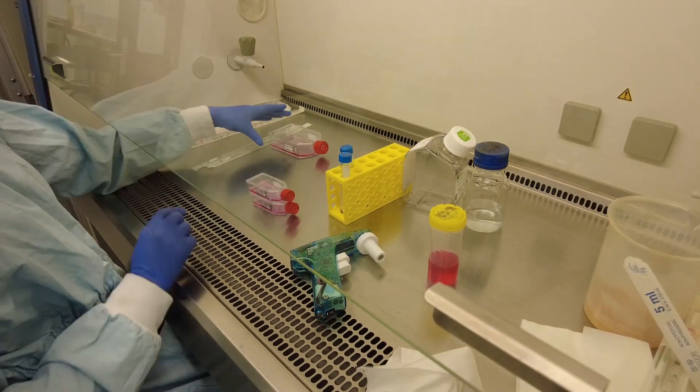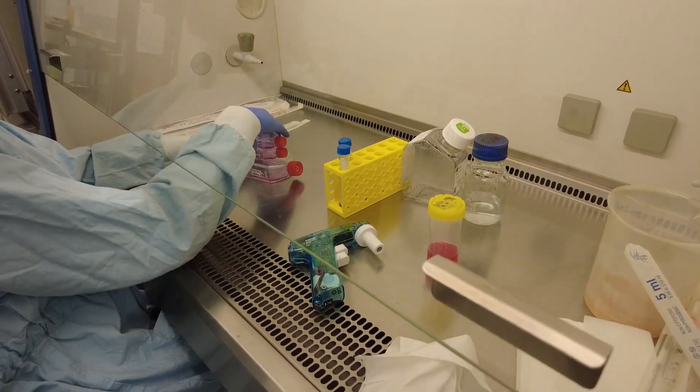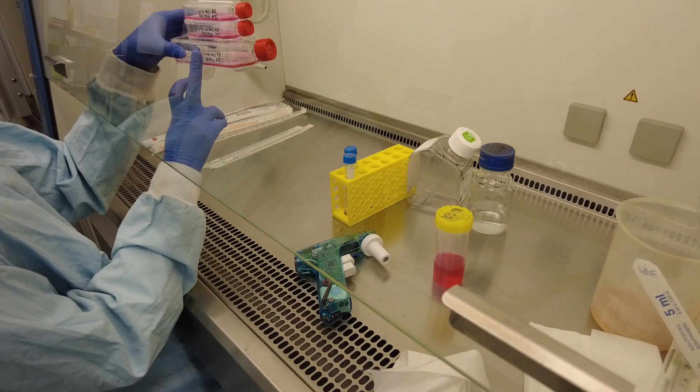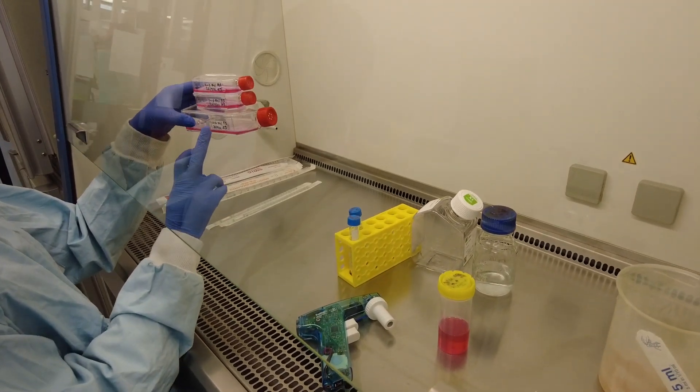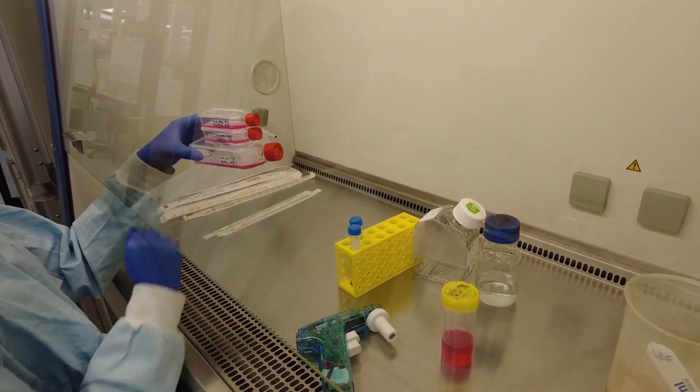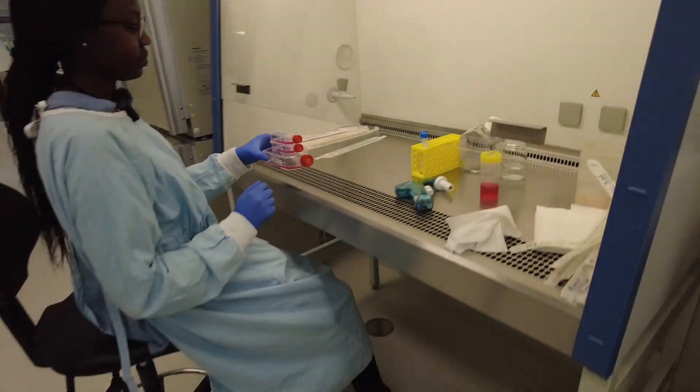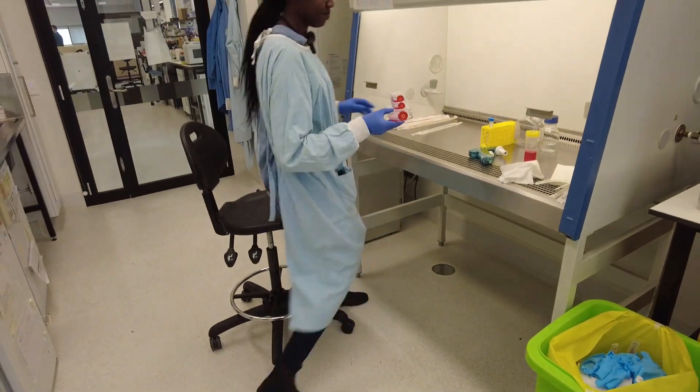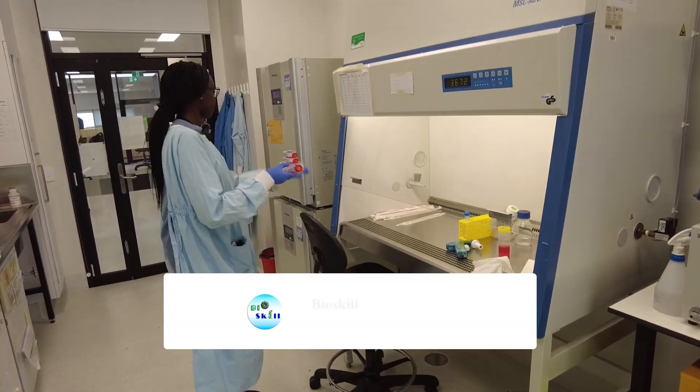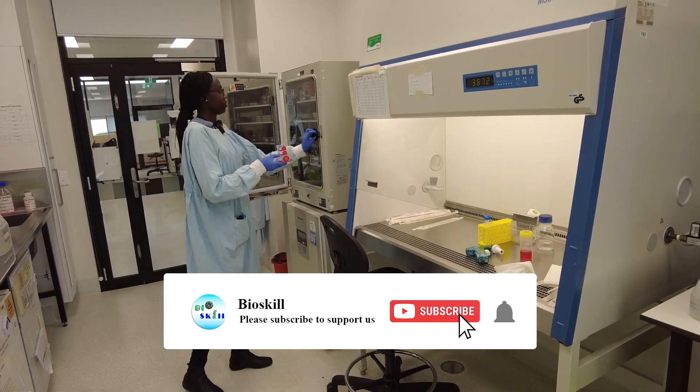Make sure it's covering the entire base. And now we've split our cells into three different flasks. And this Passage 3, we're going to leave it and put it into the incubator.